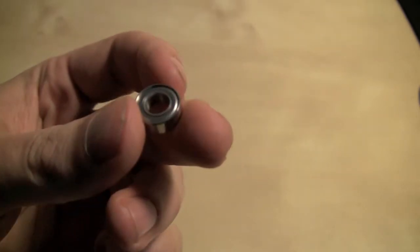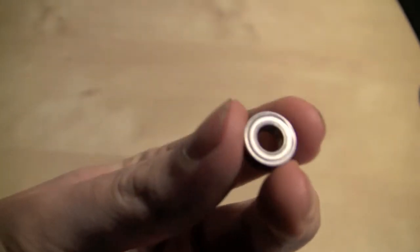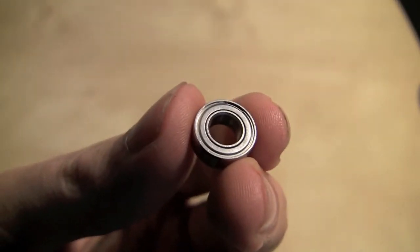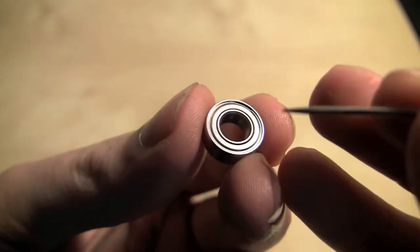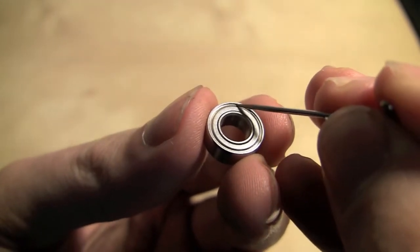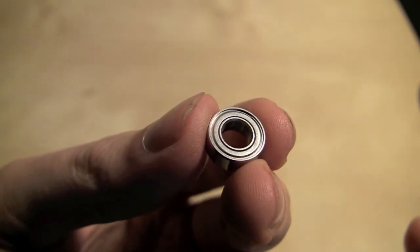Now this first process is going to involve taking off the bearing shield. The bearing shield is held in by a little tiny piece of metal that sits in between the body of the bearing and the shield, sort of squeezing it on top. Now you can remove this by locating a gap in this piece of metal, which I'm pointing to right here. It's hard to locate, but when you find it, you'll know it.